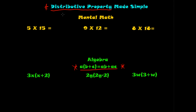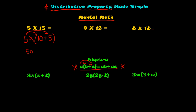So what is 5 times 15? Here's a little example on mental math. Instead of trying to think of 5 times 15 directly, notice that 15 is a combination of 10 plus 5. So really you have 5 times (10 plus 5). According to the distributive property, you distribute the 5 into both pieces: 5 times 10 is 50, and 5 times 5 is 25, so 50 plus 25 is 75.